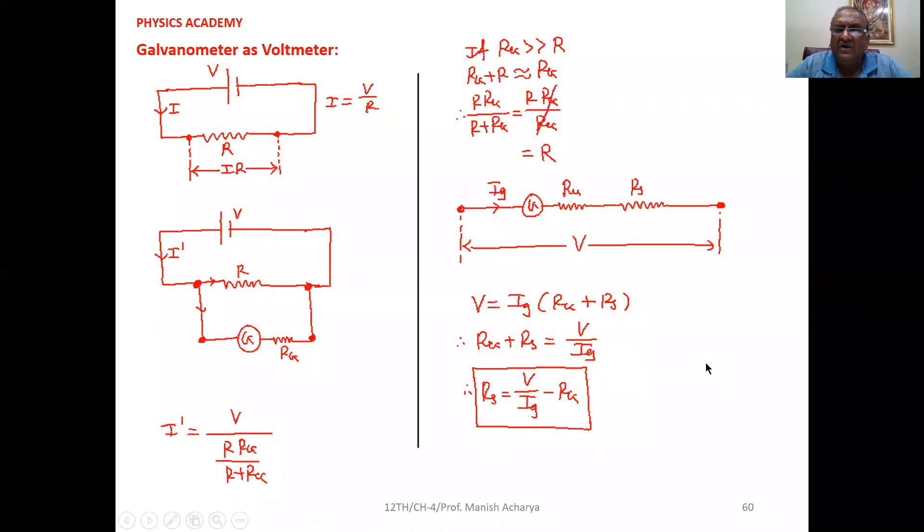To convert a Galvanometer into an Ammeter, theoretically we discussed that the resistance of the Galvanometer should be zero, but practically it is not possible. So remember this: for an ideal Ammeter, the resistance should be equal to zero. And to convert a Galvanometer into a voltmeter, its resistance should be as large as possible. So we can say for an ideal voltmeter, resistance should be infinite.